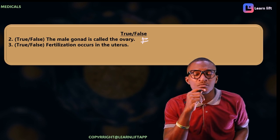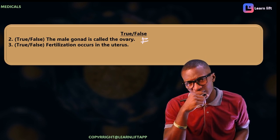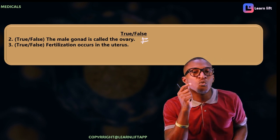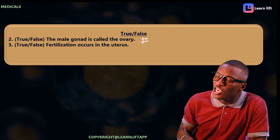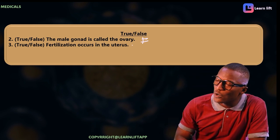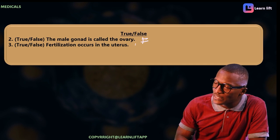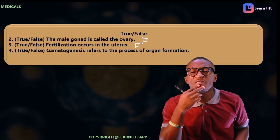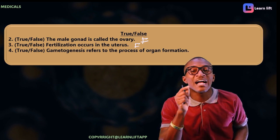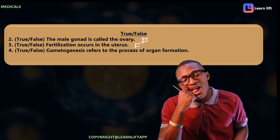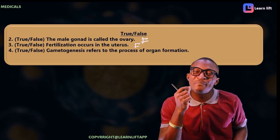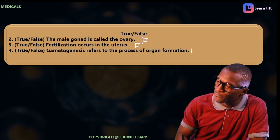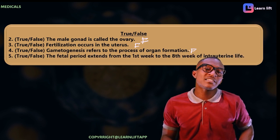Next true or false: fertilization occurs in the uterus. Is that statement correct? That is also false, because fertilization takes place in the fallopian tube — specifically in the ampullary part of the fallopian tube — not in the uterus. Next: gametogenesis is referred to as the process of organ formation. That is also false — gametogenesis refers to the process of the formation of gametes, not organs.